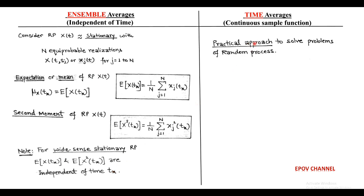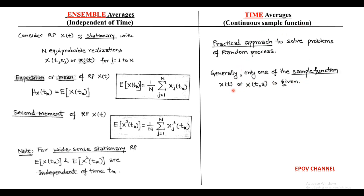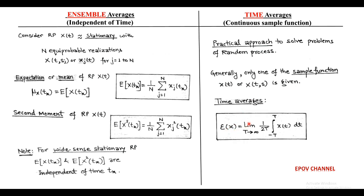In actual practice, the approach to solve problems of random process requires time averages. Time averages are the continuous sample functions obtained generally from one of the sample functions, say x(t). The time average is denoted as E[x] = limit as T→∞ of (1/2T) integral from −T to +T of x(t) dt.